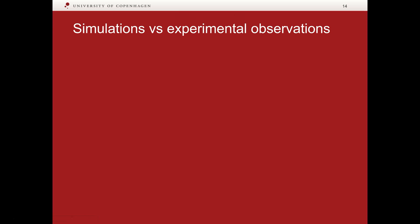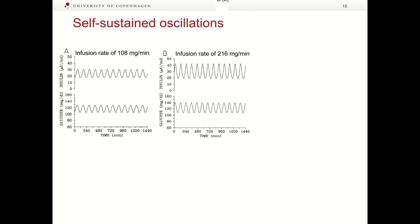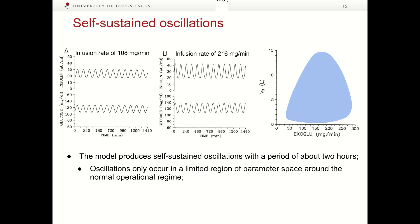Let us compare simulations and experimental observations. Simulations were performed with different infusion rates of external glucose. Concentrations of plasma insulin and plasma glucose were plotted as functions of time. One can see that model produces self-sustained oscillations with a period of about 2 hours. However, oscillations occur only in a limited region of parameter space, marked in blue in the figure, that corresponds to normal operating regime. For very small and for very large blood glucose concentrations, the system demonstrates stable equilibrium, that is outside of blue area.